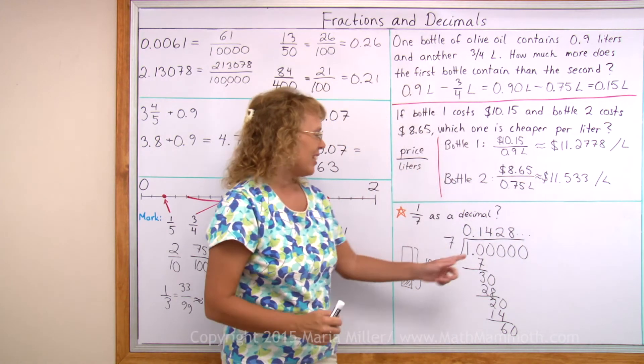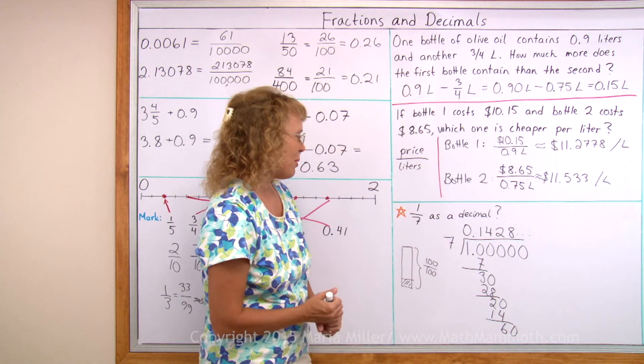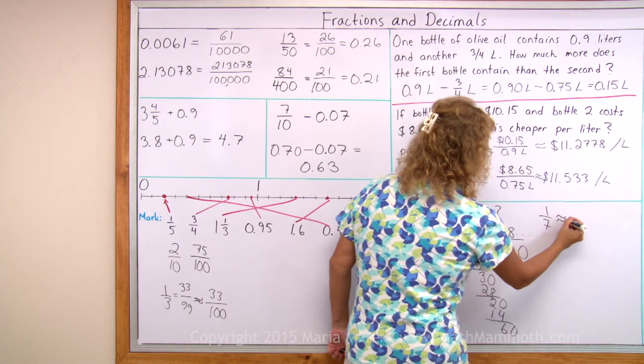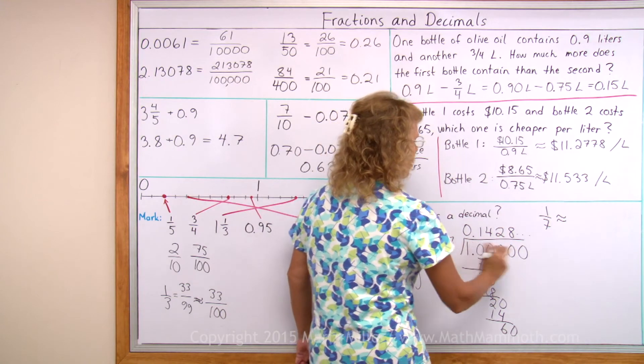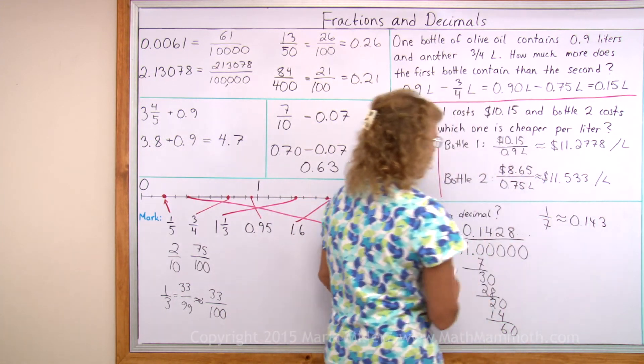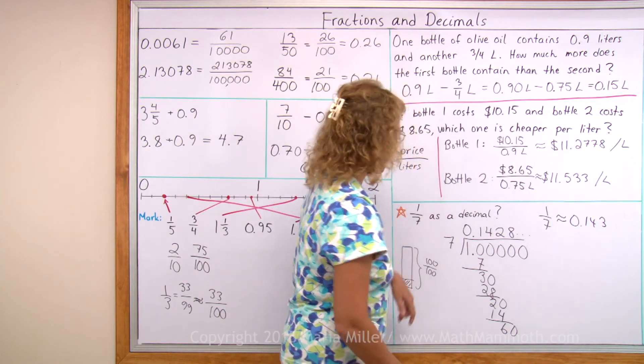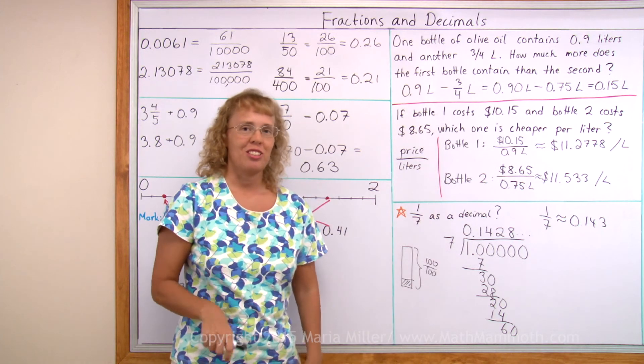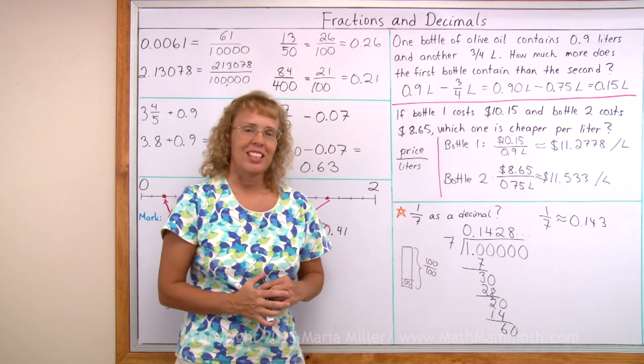So now you can see it is about fourteen hundredths as a decimal. And I can round it to the thousandths here. It is about zero point one four three, one hundred forty-three thousandths. So in general, any fraction you have, you can use long division or calculator to change it into a decimal. We're all done with this lesson.